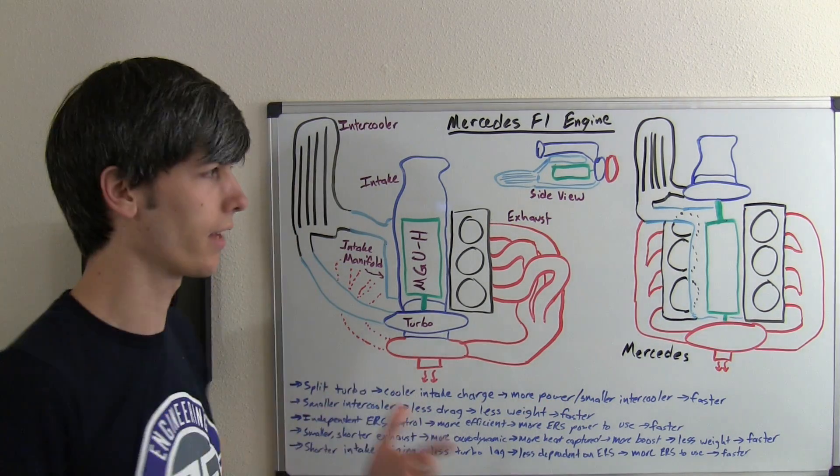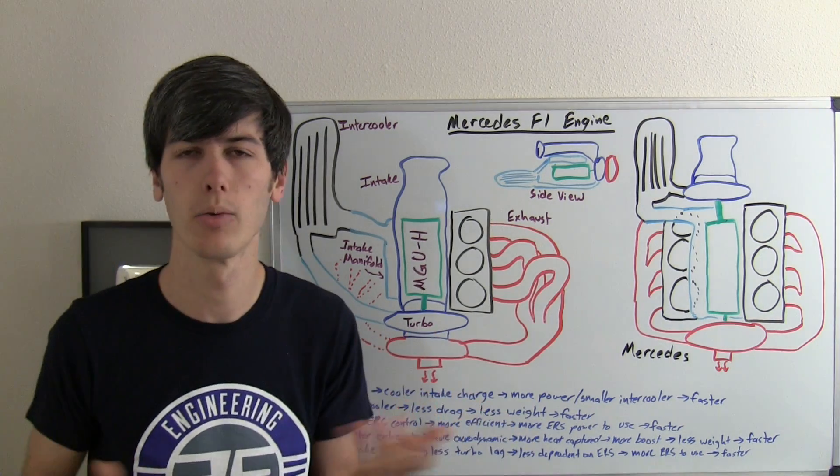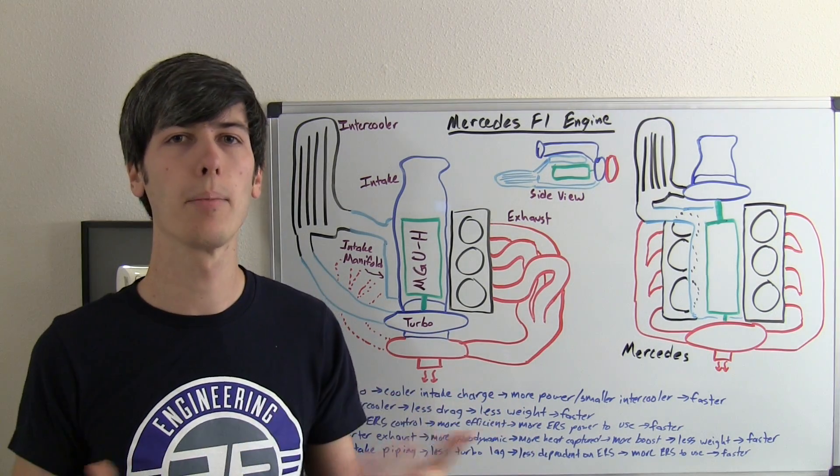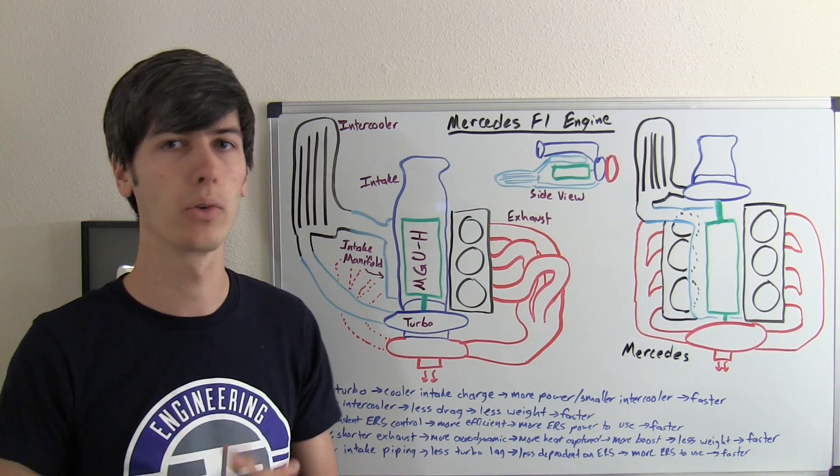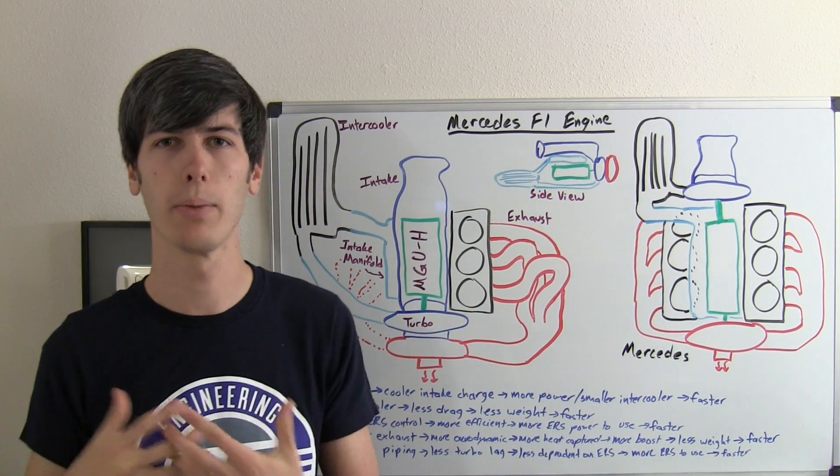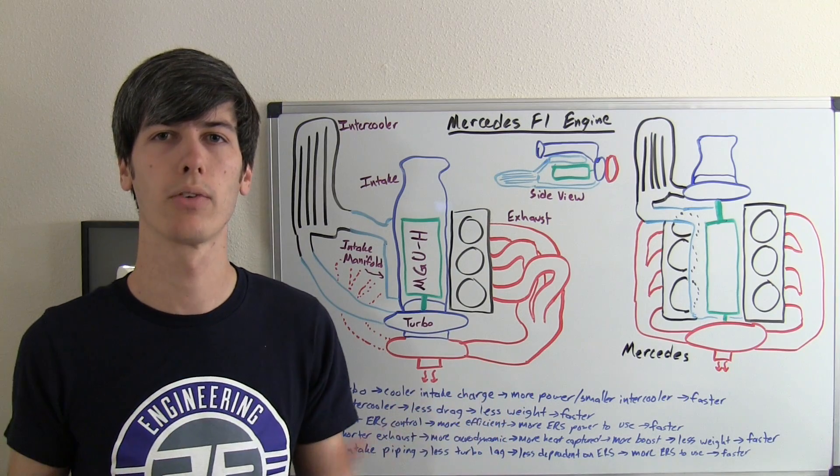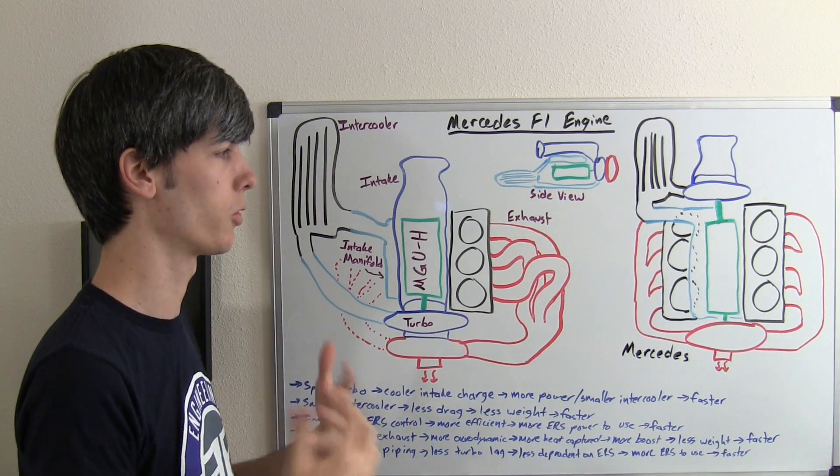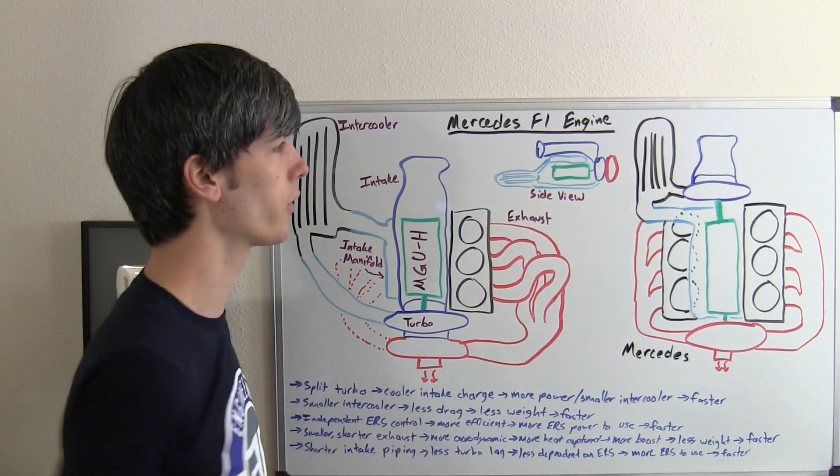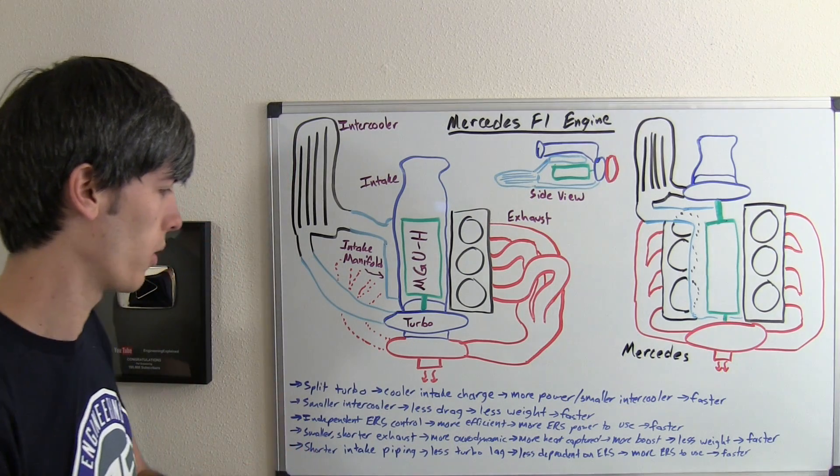Shorter piping means less turbo lag. You're thinking, okay, well the ERS system can compensate for turbo lag, and you're absolutely correct. But in this case it doesn't have to compensate as much, which means it can use that leftover energy for the ERS system to accelerate the vehicle rather than improving its turbo lag.